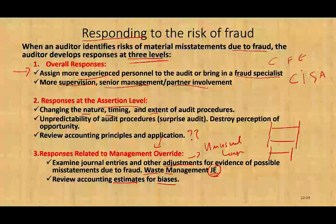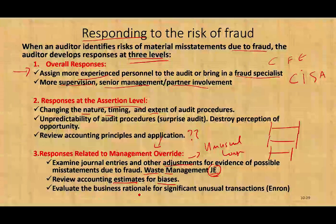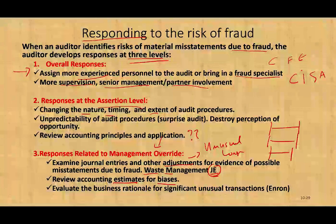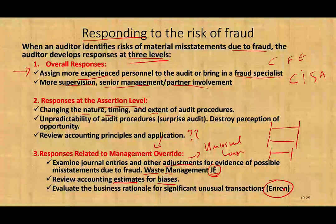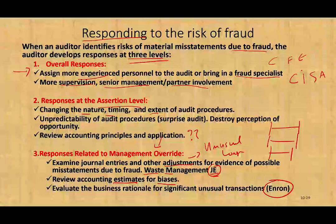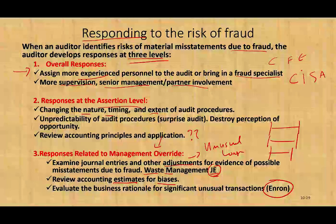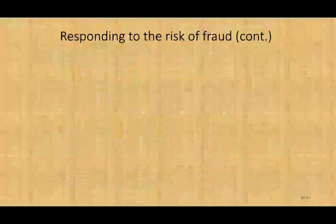We also need to evaluate the business reasons for significant or unusual transactions — really question management about why they're doing things a certain way. A case in point is Enron. Enron stopped consolidating their subsidiaries. Why? Because they found a loophole and, based on that loophole, they did not consolidate debt sitting on the subsidiaries — they were hiding it by not consolidating. What was the business rationale for not consolidating? There was no business rationale. It was fraud.